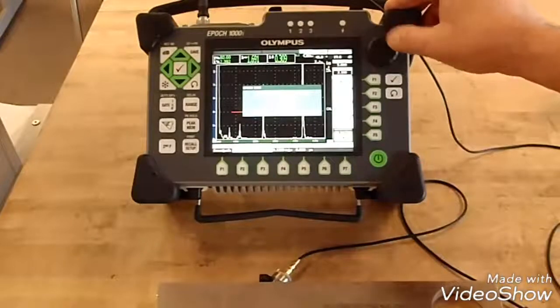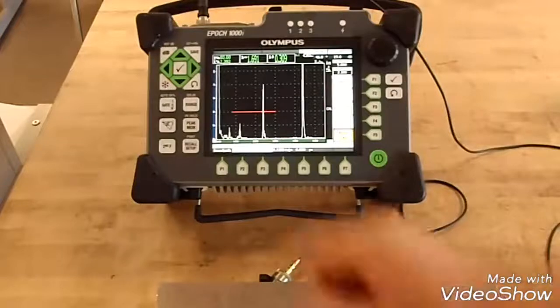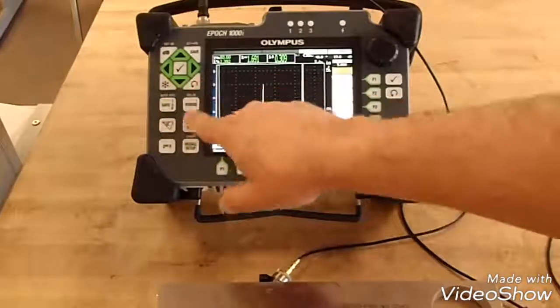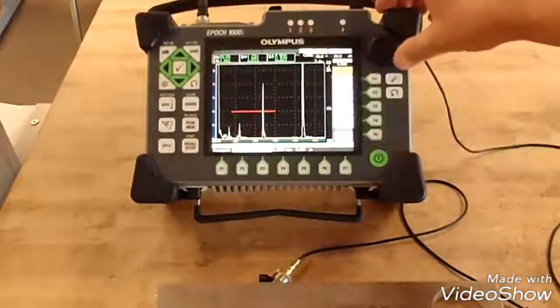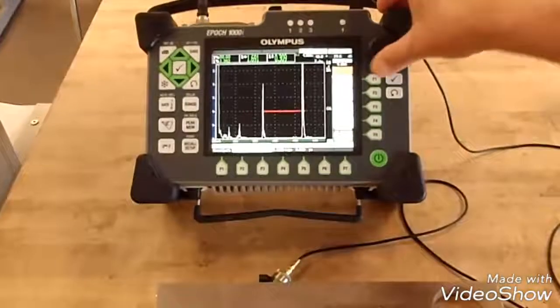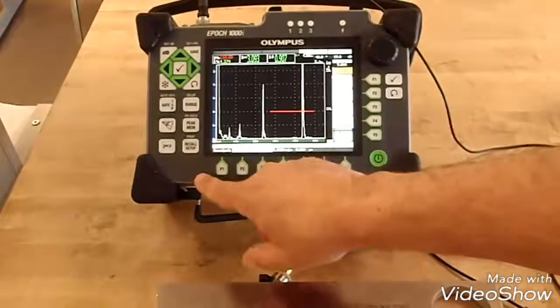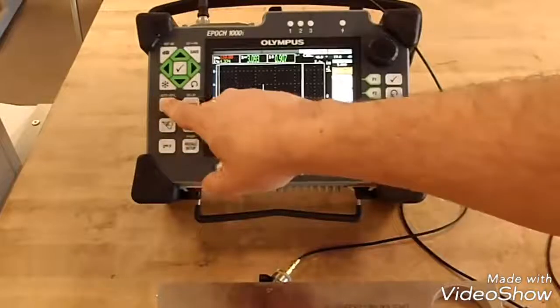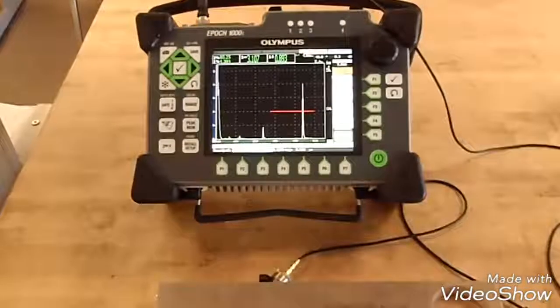Where's that two inches? Move your gate over to the four inch radius. Take it to 80% full screen height.